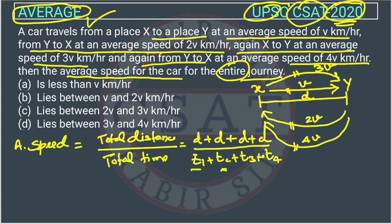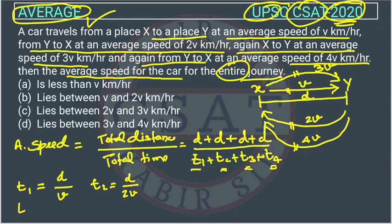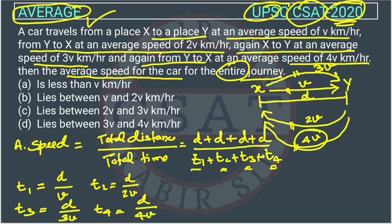The time will change because if you are going from one place to another at speeds of 20, 30, or 40 km/h, the time changes, but the distance remains the same. So T1 is D upon V. T2 is D upon 2V. T3 is D upon 3V. And T4 is D upon 4V. I am telling you every step so that every student understands it.